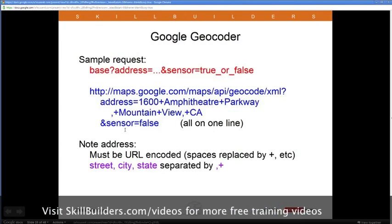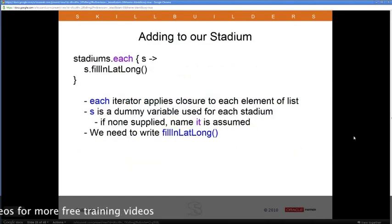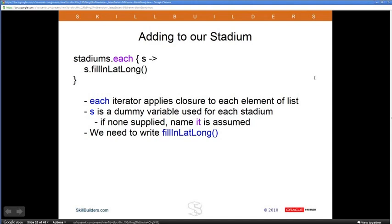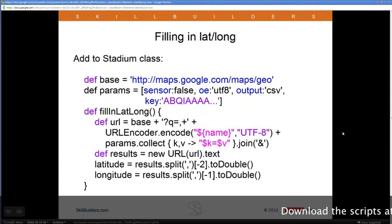Here's the plan: take the stadiums collection, and for each stadium (called 's'), invoke a fillInLatLong method. The 'each' iterator is built into all Groovy collections, like the new Java for-each loop. The 's' is just a dummy variable — if you don't specify one, the default is 'it.' In fillInLatLong, I build the URL using the same collect-and-join structure as before, then invoke url.txt to get the response — a string like '200,4,latitude,longitude'. I call split at the comma, then access the resulting array from the right end using minus-2 and minus-1 to grab latitude and longitude, converting them to doubles.